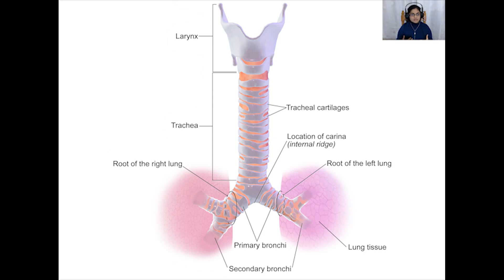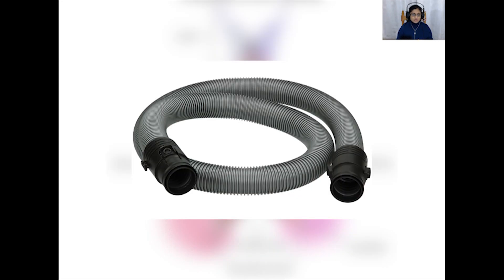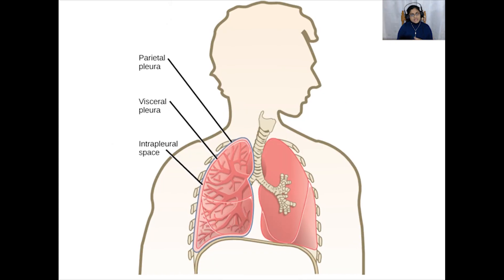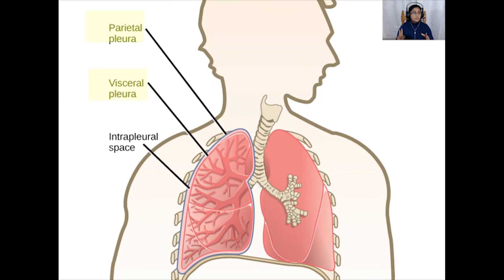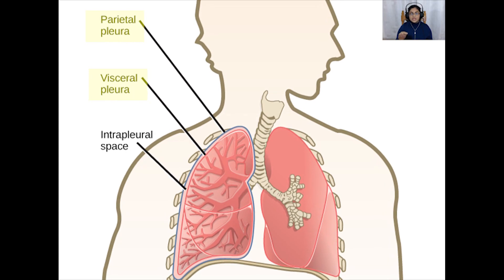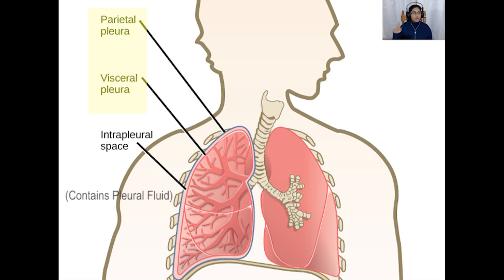The cartilage rings are similar to the rings in a vacuum cleaner hose — without them, the hose would squash flat when the cleaner sucks air in. The inside of the thorax is separated from the lungs by two thin moist membranes called the pleural layers, which form a continuous airtight envelope around the lungs. Between the two layers is a space called the pleural cavity, filled with a thin layer of liquid called pleural fluid. This acts as lubrication so the surfaces of the lungs don't stick to the chest wall when we breathe in.